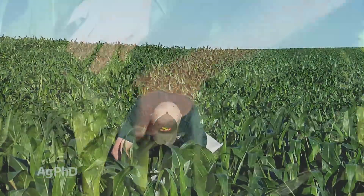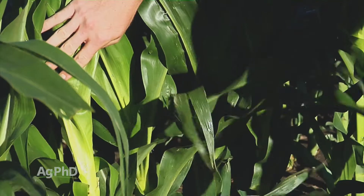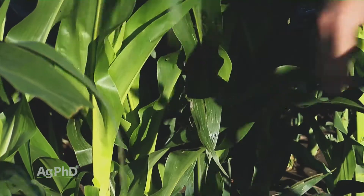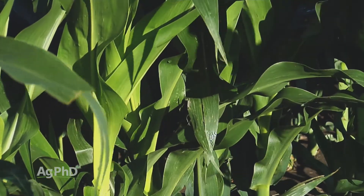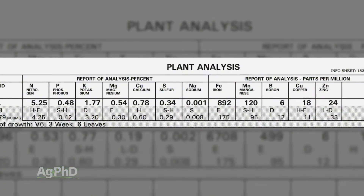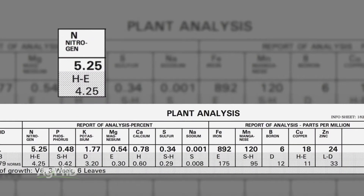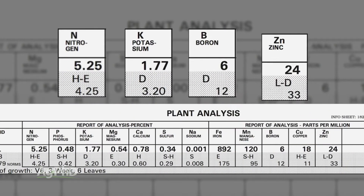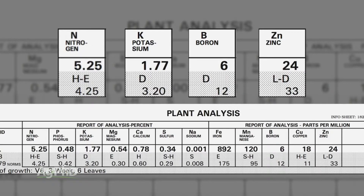So the next year we went out there and pulled tissue samples every single week in corn. What we found is every single week we were excessive on nitrogen and completely deficient on potassium, boron, and zinc. Week after week it just told us — so we had that fertility program just dialed right in, didn't we? It just told us, oh my goodness, you guys are so wrong.